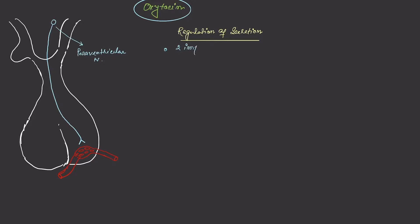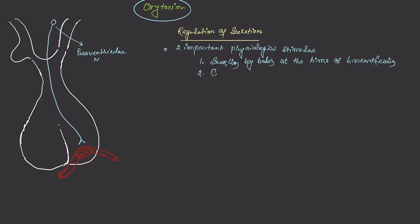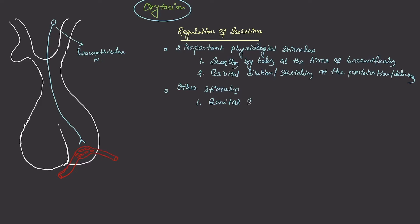There are two important physiologic regulators of oxytocin secretion. The first is suckling by the baby during breastfeeding — the oxytocin level in the mother's blood increases. The second important physiologic stimulus is cervical dilation or stretching during parturition or delivery of the baby, which also increases oxytocin. Additionally, in females, genital stimulation during coitus increases oxytocin secretion.